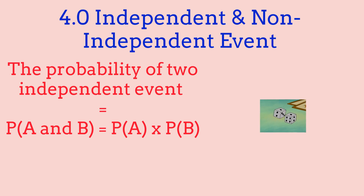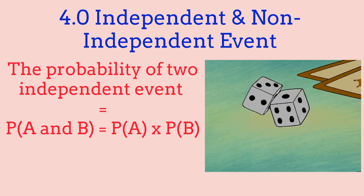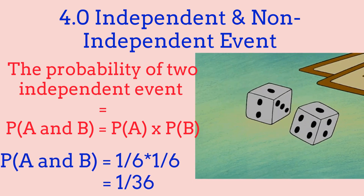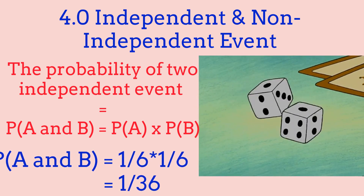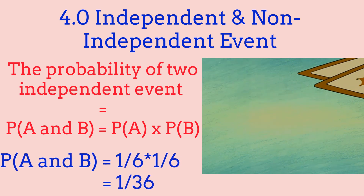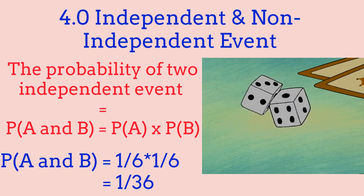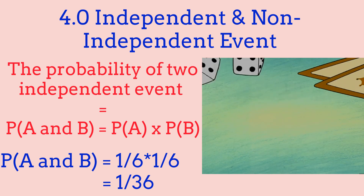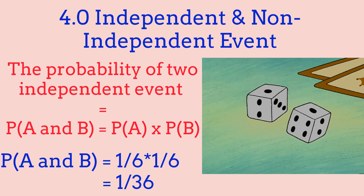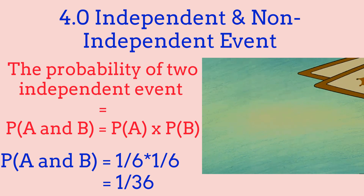For example, on a dice: what are the chances that we're going to get a 1 and a 1 on two different dice? We already know that on our first dice we have a 1 over 6 chance of getting a 1, and on our second dice we also have a 1 over 6 chance. So probability A is 1/6 and probability B is 1/6. Multiplying them: 1 times 1 is 1, and 6 times 6 is 36, so the chance of getting a 1 and 1 on two different dice is 1 over 36.